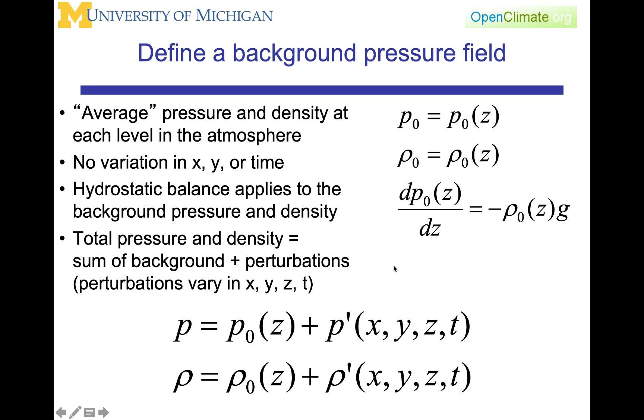We're then going to add to that average state a deviation, which will be p′ and ρ′. The deviations will each be functions of x, y, z, and t, hence they are fully variable in both space and time.